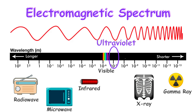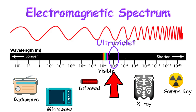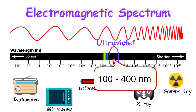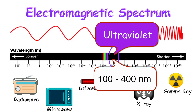Note that we can only see visible light out of all electromagnetic waves. At the violet end of the visible spectrum, the wavelengths are too short to be seen by the naked eye. They range from 100 to 400 nanometers and are classified as ultraviolet, or UV.